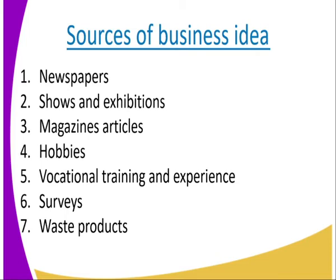Number two, it is from shows and exhibitions. When we talk about shows and exhibitions, they are events like agricultural shows and exhibitions. You just go there and make observations — what is not provided, how can I improve this — and then you start thinking about it. Then, number three, magazine articles. These are articles found in magazines; you read them and you can get a business idea from there.